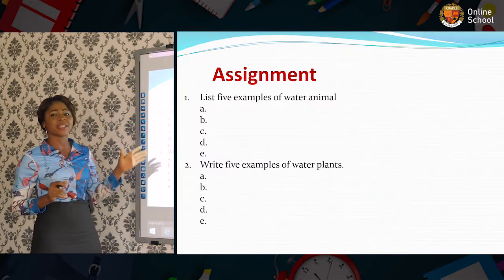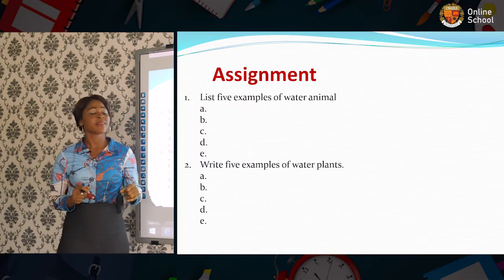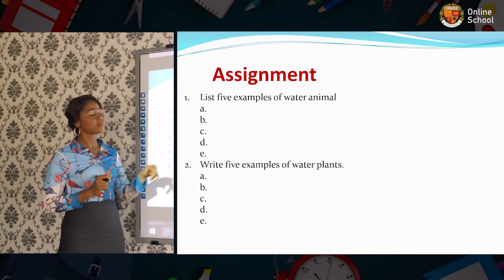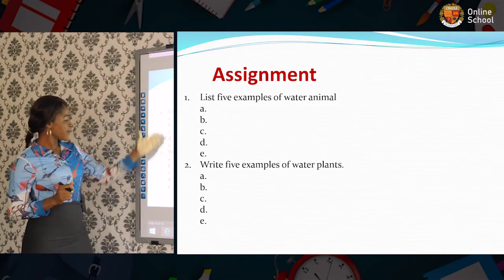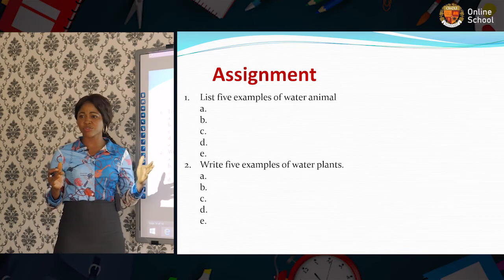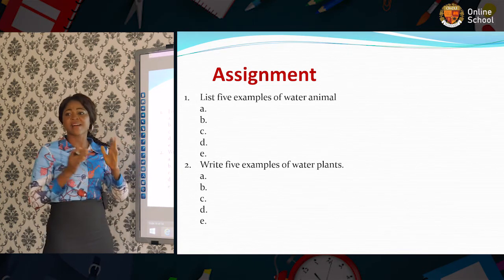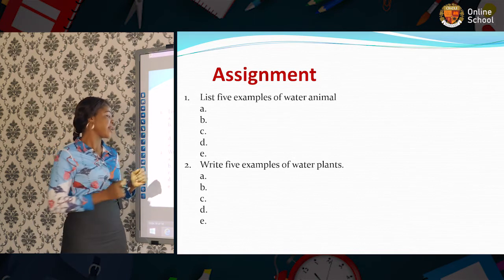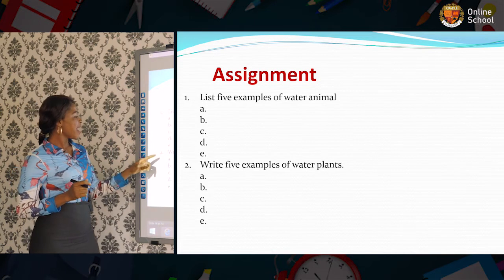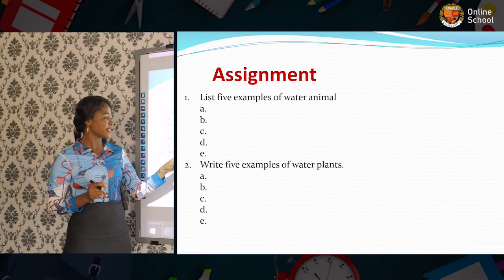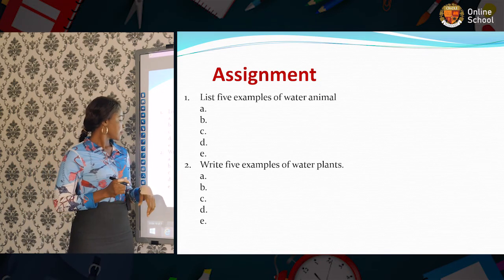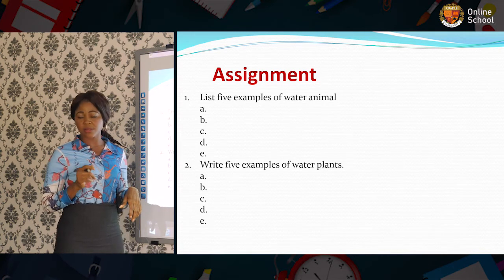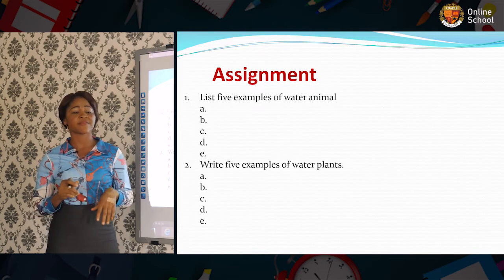So now we'll be looking at this assignment. List five examples of water animals — you have your spaces here to write them. You have many, I told you; you shouldn't only look at the ones I have given you, also look at some others. Number two: write five examples of water plants. I wish you all the best. I want you to stay good and be safe. Bye.